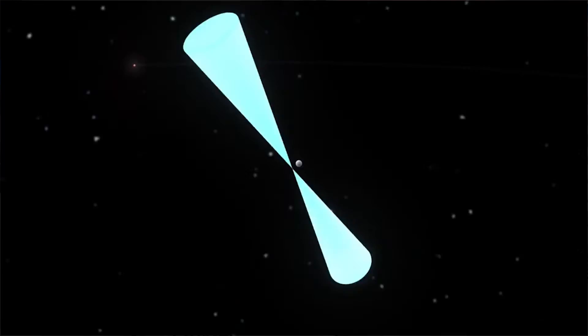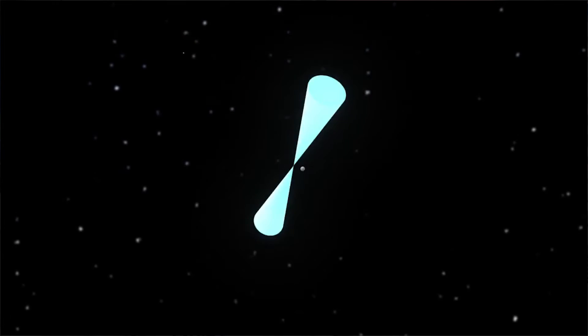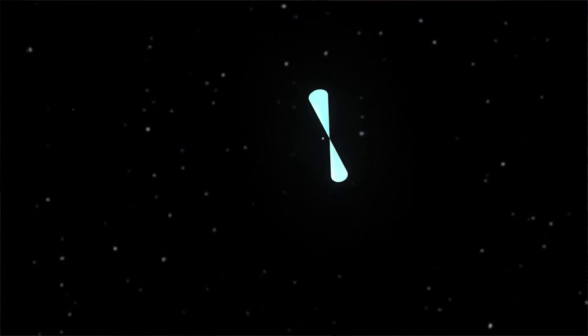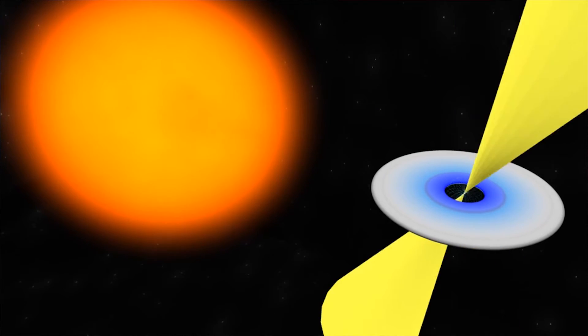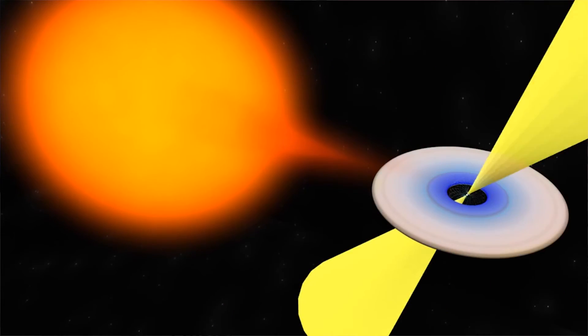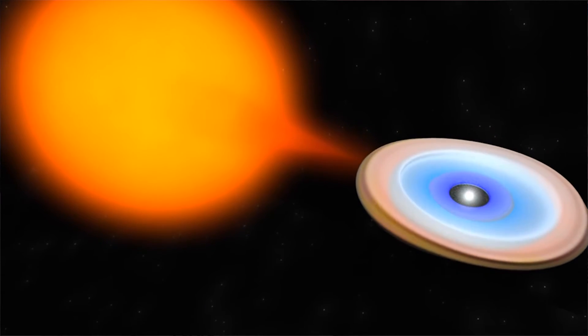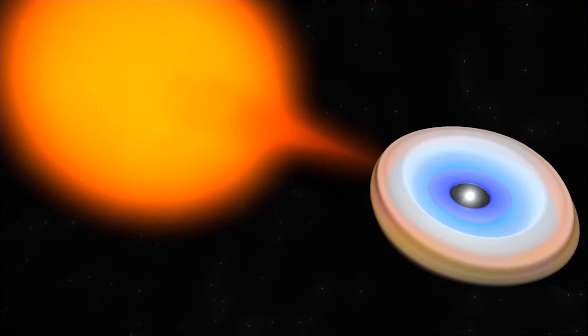They weigh about half a million times as much as the Earth, spin up to as fast as a kitchen blender, and are only about as big as a large city. The density is equivalent to having all 7 billion people on Earth squeezed into the size of a sugar cube. They have the strongest magnetic fields in nature that we know about, and all these things combine to make them really extreme environments.